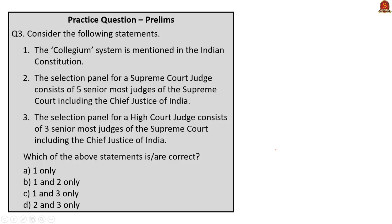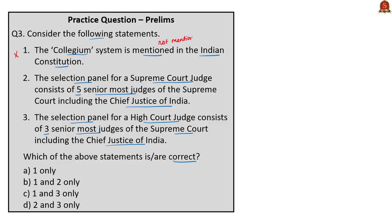Practice prelims question 3: Consider the following statements. Statement 1: the Collegium system is mentioned in the Indian Constitution. Statement 2: the selection panel for a Supreme Court judge consists of 5 senior most judges of the Supreme Court including the Chief Justice of India. Statement 3: the selection panel for a High Court judge consists of 3 senior most judges of the Supreme Court including the Chief Justice of India. Statement 1 is wrong — the Collegium system is nowhere mentioned in the Indian Constitution; it was introduced by the Supreme Court itself. Statements 2 and 3 are correct. The correct answer is option D, 2 and 3 only.